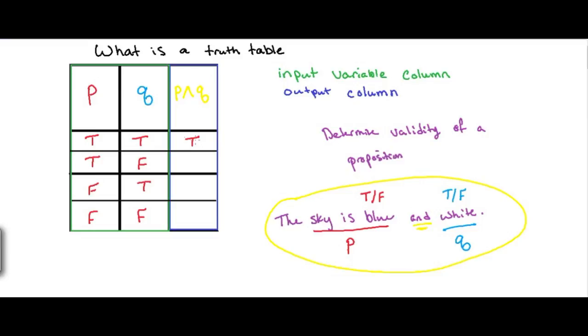If the sky is blue is true and the sky is white is false, this makes the statement false because the sky is not blue and white. Similarly for the next one, if the sky is not blue and the sky is white, then that doesn't make the statement the sky is blue and white true. So this would be false. And if they're both false, that would make the statement false as well.